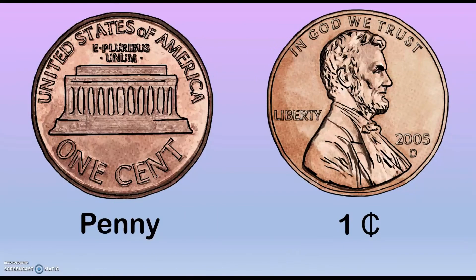On the other side there's a picture of President Roosevelt. A penny also has two sides. It's worth one cent. On one side there's a picture of the Lincoln Memorial — it's a type of building — and it also has the words 'one cent.'